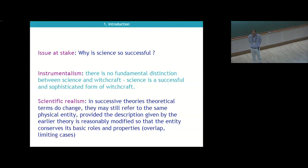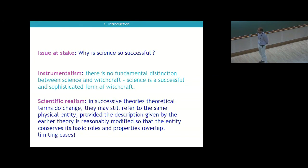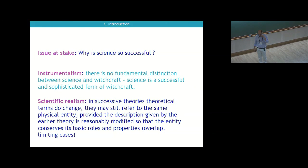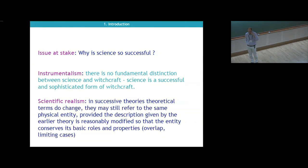There's always the issue of how, when we change from one theory to another, we can still say that the terms refer to aspects of physical reality. There are many arguments given. One thing we know how to do is recover Newtonian from relativistic mechanics as a limiting case. But we cannot recover classical physics from quantum mechanics in the same way.